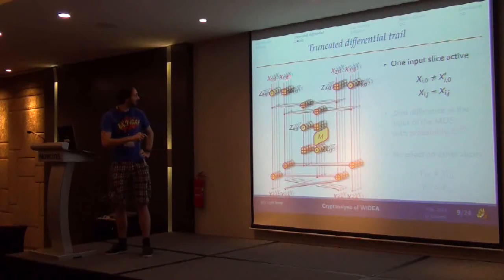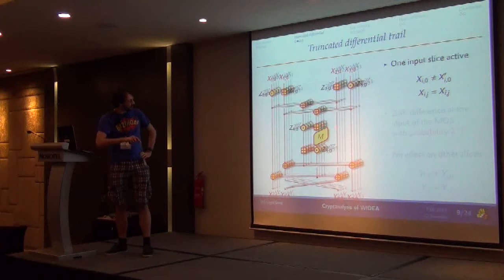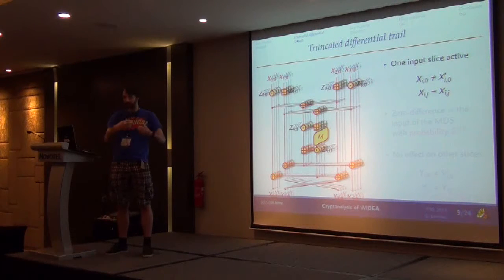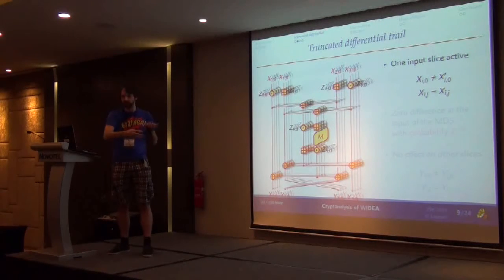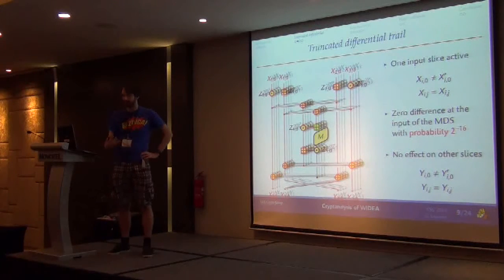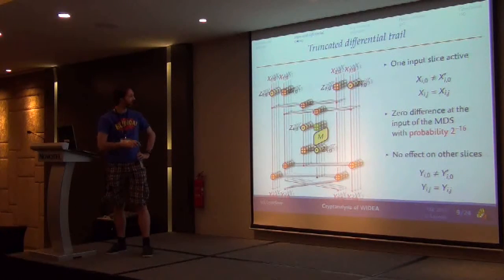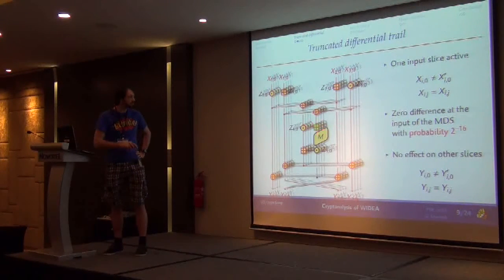If you look at W-IDEA with one active input slice — the red values are active — only the first slice is active initially and the others are inactive. Everything in the first slice will be active, and then you get to the MDS matrix. The MDS matrix output will be fully active because its input is active, and all outputs become active because it's MDS, so all the lines are active and you get differences everywhere. However, it's possible that the input to the MDS matrix is zero with probability 2^{-16}, since it's only a 16-bit value — so it's not very expensive to make it inactive.